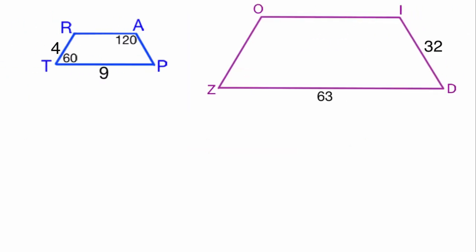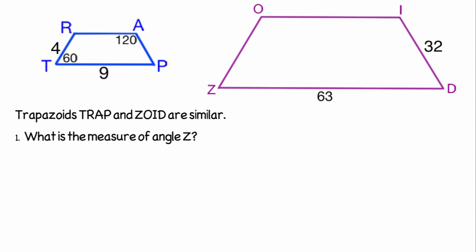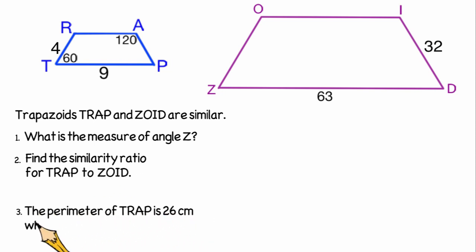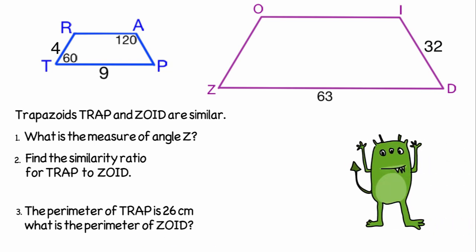Let's compare two trapezoids. On the left we have the trapezoid trap, and on the right we have the trapezoid zoid. So I'm going to leave you with questions to solve. What is the measure of angle z? Find the similarity ratio of the sides trap to zoid. And last, if the perimeter of trap is 26 centimeters, what is the perimeter of zoid? Pause the video and work out these answers. Then unpause the video and we'll go over it together.